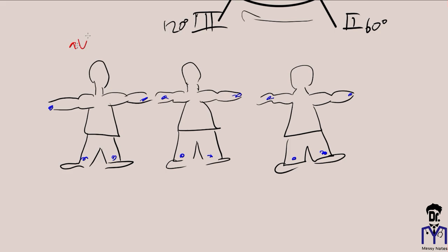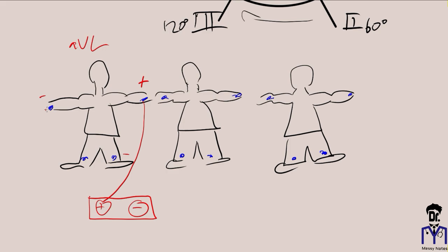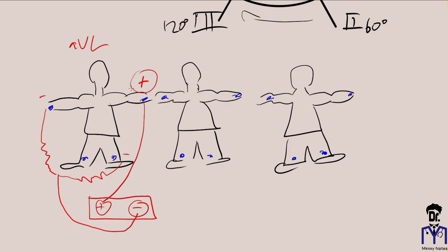For AVL, we make the left arm positive and the average of the other two limbs negative. 'L' is for left, which is why the left arm is made positive. The imaginary line from the average negative point to the positive electrode creates our lead, and the angle of orientation for AVL is negative 30 degrees.